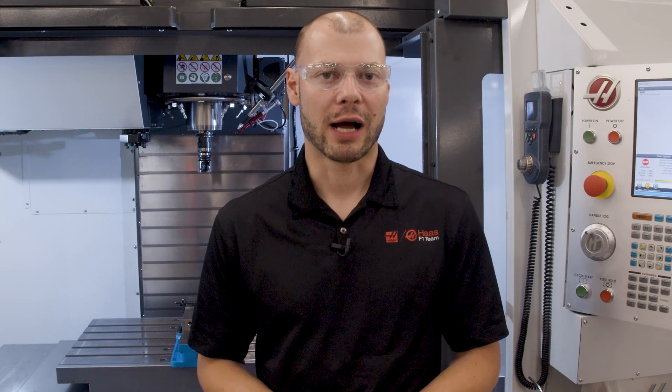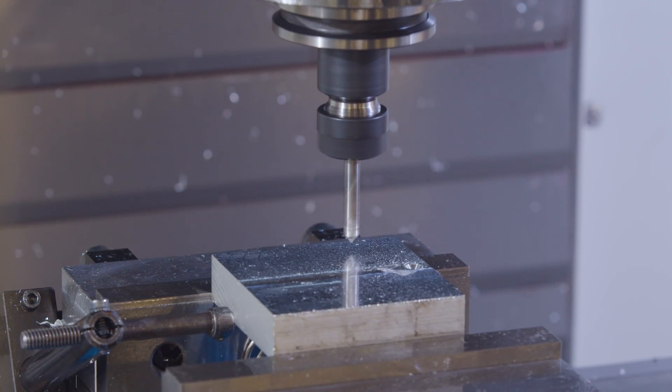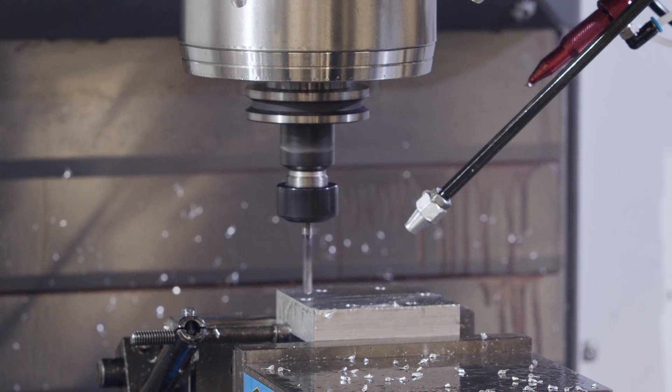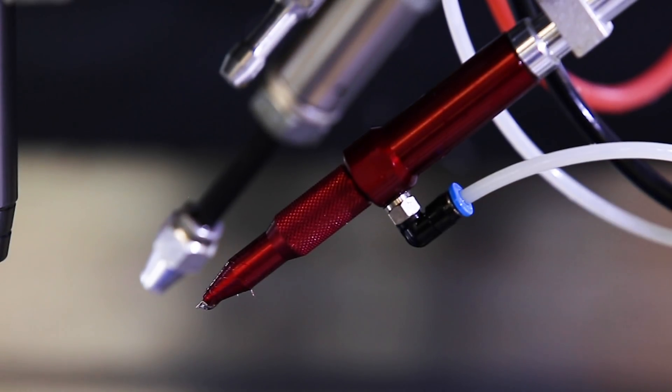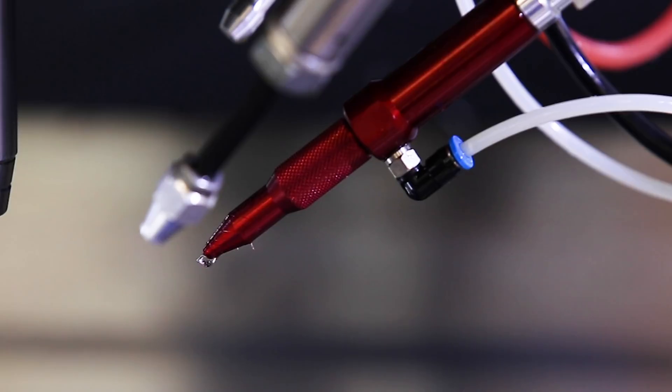The PulseJet system does require your machine to have the P-Cool option, and it's available now on all vertical mills. So take a minute to consider adding PulseJet to your machine to increase productivity on your drilling, tapping, and other low-quantity lubrication operations. Thanks for watching, catch you next time.